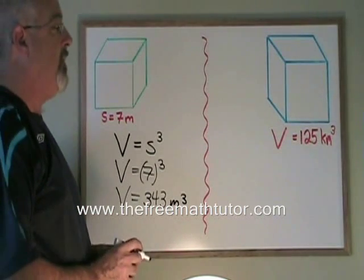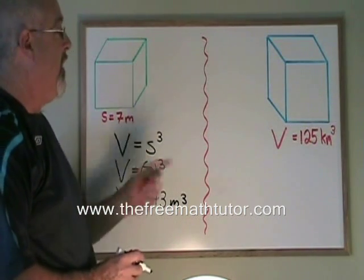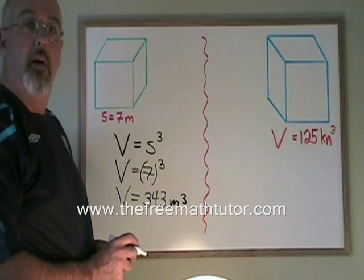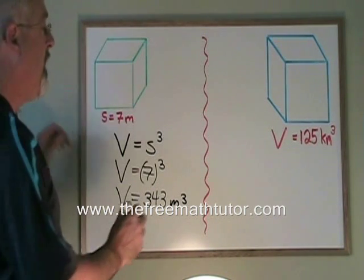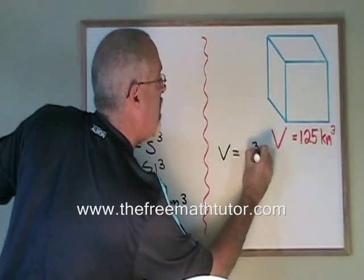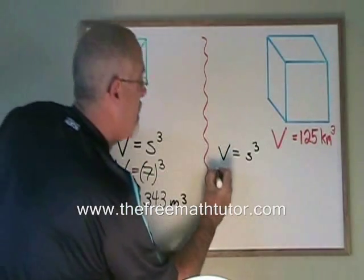In the second example, we already know the volume. The volume of this cube is 125 kilometers cubed. We want to know the side length. We take our volume formula and we plug 125 into the V position.